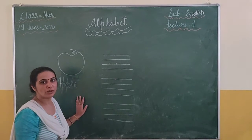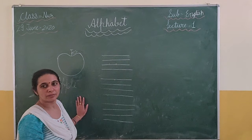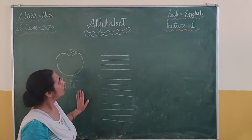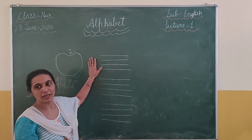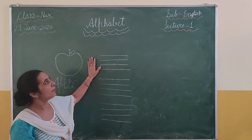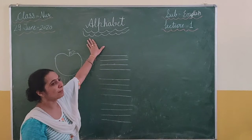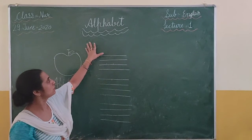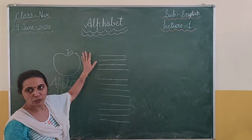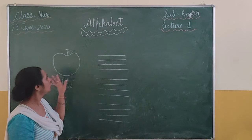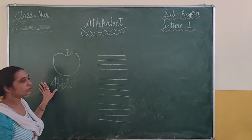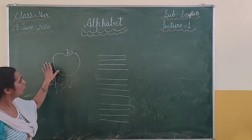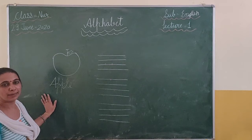Now you learned A from ANAR. Now we use the alphabet. In the alphabet, we use A to Z. We use A for apple.